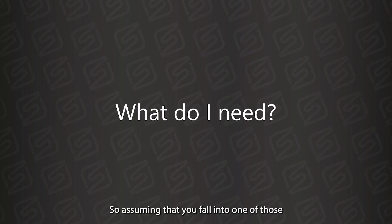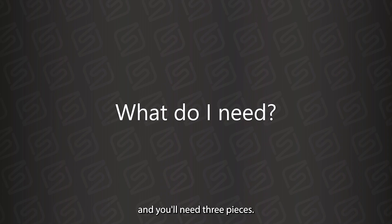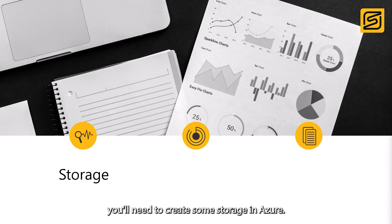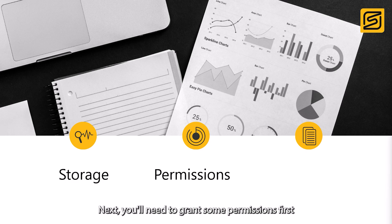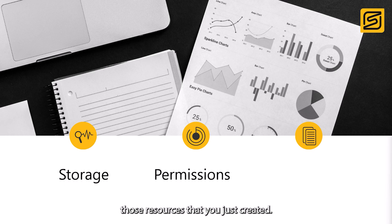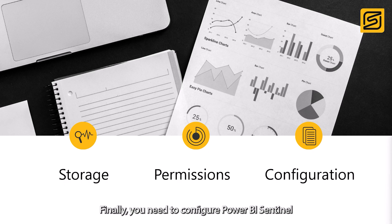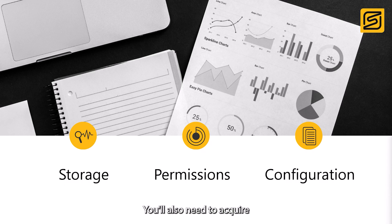So assuming that you fall into one of those three categories of users, getting started is super quick — it takes about 30 minutes and you'll need three pieces. First, you'll need to create some storage in Azure. Specifically, you'll need Azure Blob Storage to back up your Power BI reports and an Azure SQL database to store the rest of the data. Next, you'll need to grant some permissions — first so that Power BI Sentinel can access those resources you just created, and then so that Power BI Sentinel can access your environment. Finally, you need to configure Power BI Sentinel with all the details of the storage and of your environment so it knows where to look. You'll also need to acquire either a monthly or annual license for Power BI Sentinel.